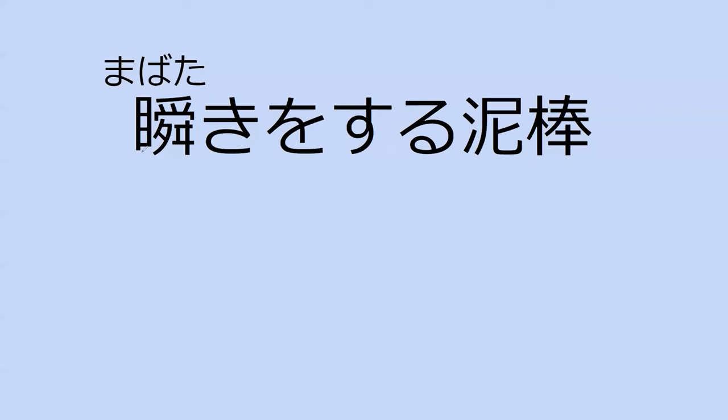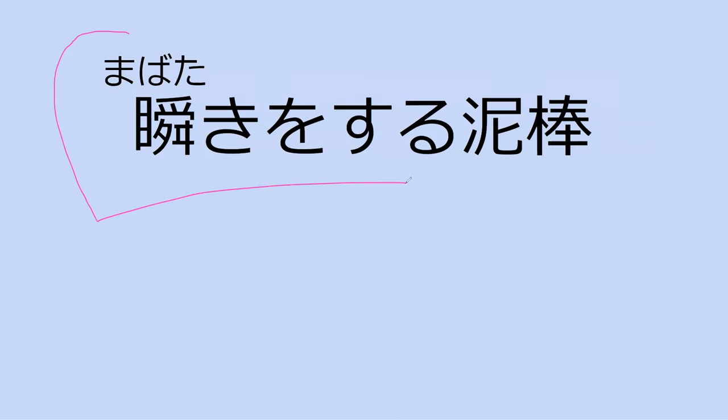Our next word is mabataki. Mabataki — I think it's eyelid, but mabataki is actually the noun for blink. Mabataki is to blink, so mabataki is the blink. Mabataki — and then it becomes to blink. So rather than saying chika chika suru, we're actually having the verb to be blinking.